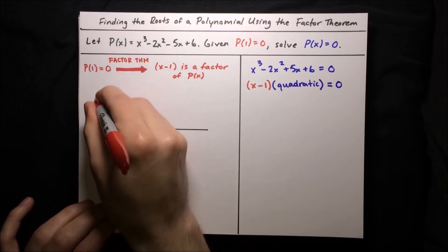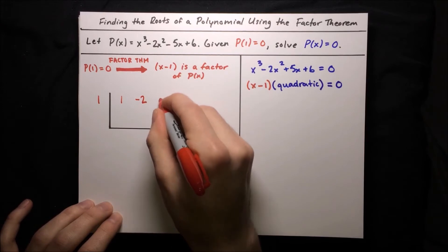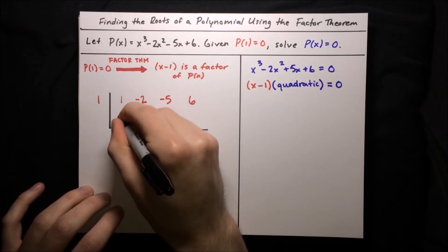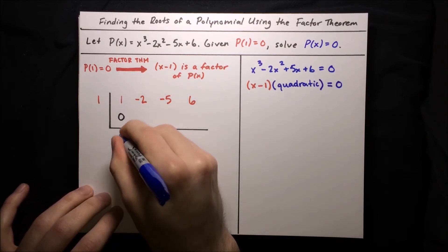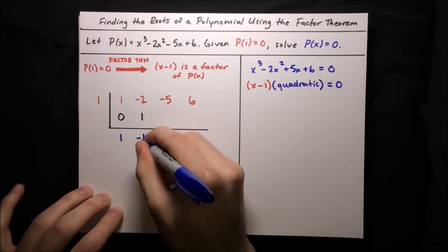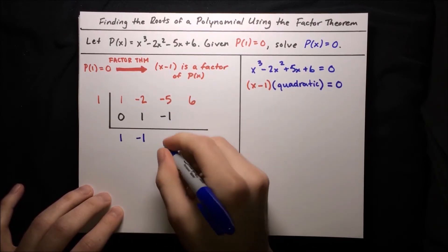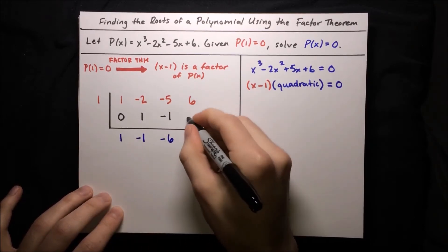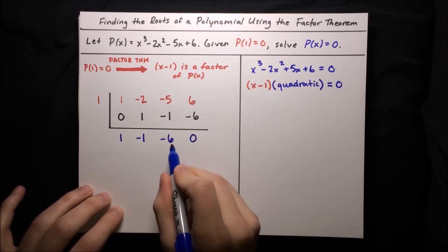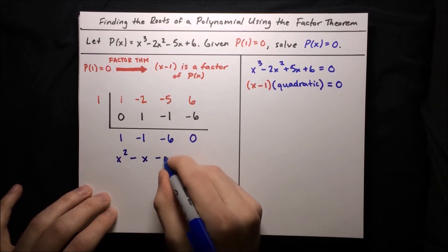Take the root 1 and put that on the top left corner, then put the coefficients of p above: 1 for x cubed, then minus 2 for x squared, then minus 5 for x, then plus 6 for the constant. Start by writing a 0 in the first column. Add down: 1 plus 0 is 1. Then 1 times 1 is 1. Add down: negative 2 plus 1 is negative 1. Multiply: 1 times negative 1 is negative 1. Add down: negative 5 plus negative 1 is negative 6. Multiply: 1 times negative 6 is negative 6. Add down: 6 plus negative 6 is 0. These give us the coefficients of our quadratic: 1x squared, then minus 1x, then minus 6, with no remainder.